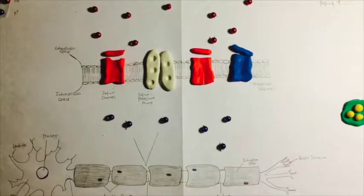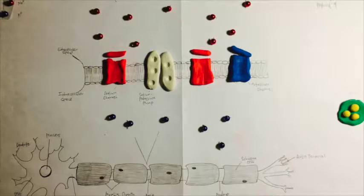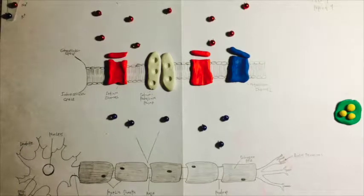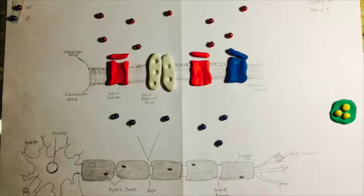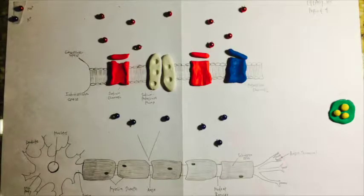The resting membrane potential is established when the potential is about negative 60 to negative 80 millivolts. The intracellular side of the membrane has a net negative charge, whereas the extracellular side has a net positive charge.